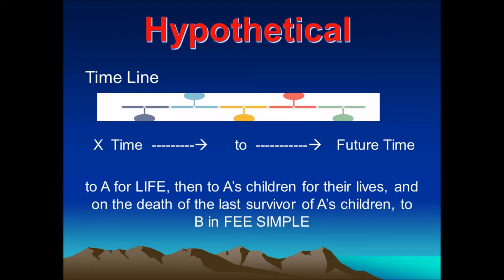What type of interest does B possess? Looking at the language 'to B in fee simple,' B's interest is a vested remainder in fee simple. Would the rule affect B's estate? No — B's interest is valid under the rule, even though it may be years before B or her successors are entitled to present possession, even if B's successors may not succeed until the death of some person not now in being, like a future-born child of A who may be the last survivor of A's children. B's interest is valid because it is an indefeasibly vested remainder from the time of its creation.